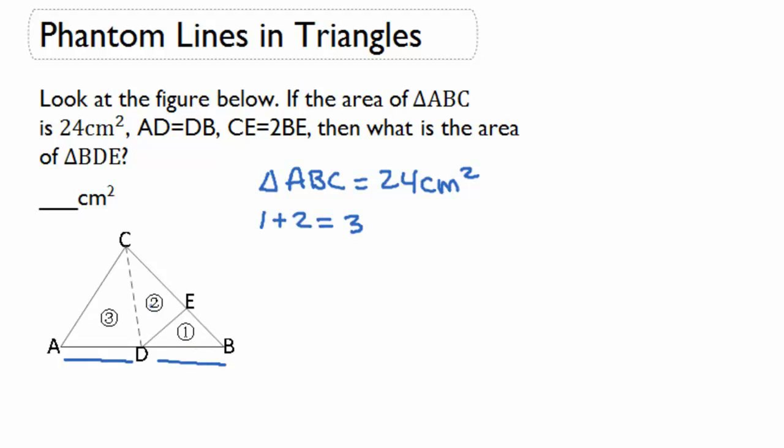Now we need to know how triangle 1 and 2 are related. Triangle 1 has a length of BE as its base, whereas triangle 2 has a length of CE, which we are given right here is twice as big as BE.